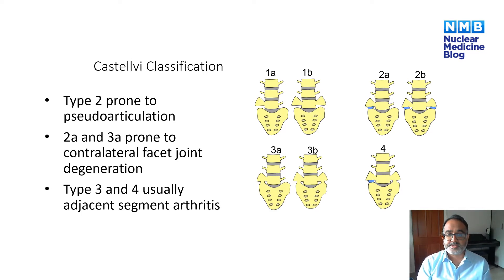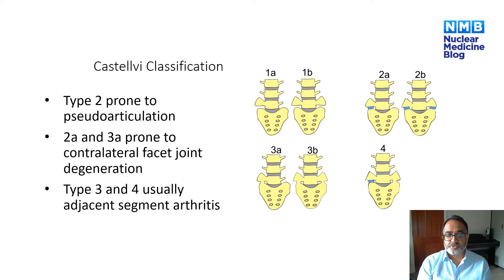There is a classification system for characterising these lumbar sacral transitional vertebrae — the Castellvi classification. In type 2, where there is fibrous fusion of the transverse process with the sacrum, either unilateral or bilateral, these are prone to pseudoarticulations and pseudoarthrosis. In types 2a and 3a with unilateral fusion, patients are prone to contralateral facet joint arthritis due to partial stability at that level. Types 3 and 4 have osseous fusions and usually lead to adjacent segment arthritis in the level immediately above.